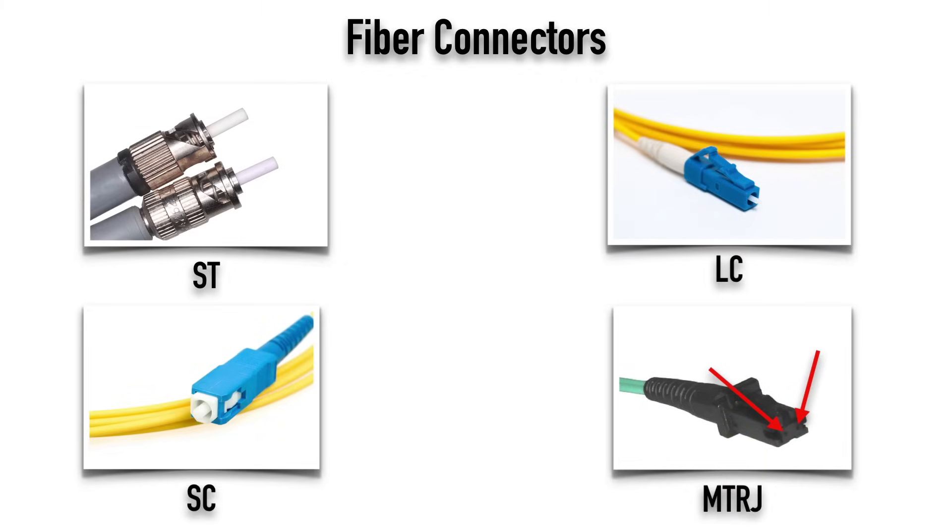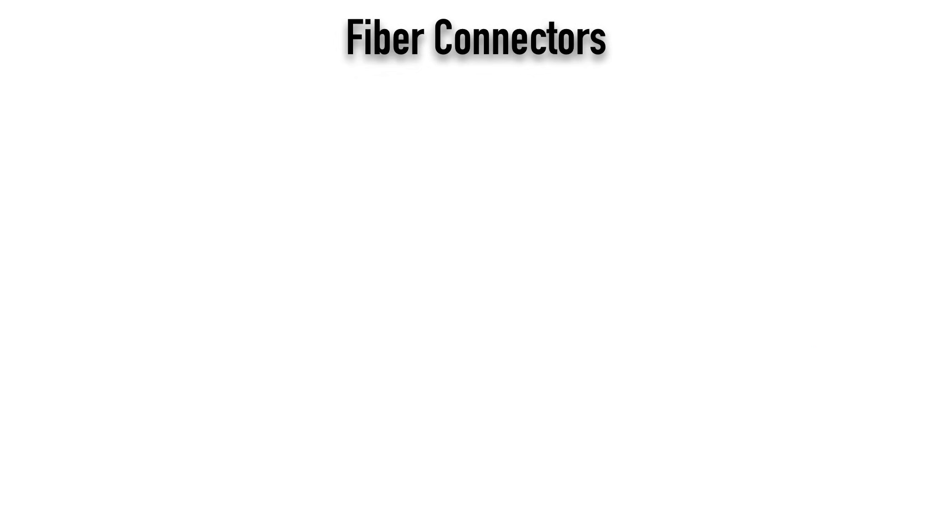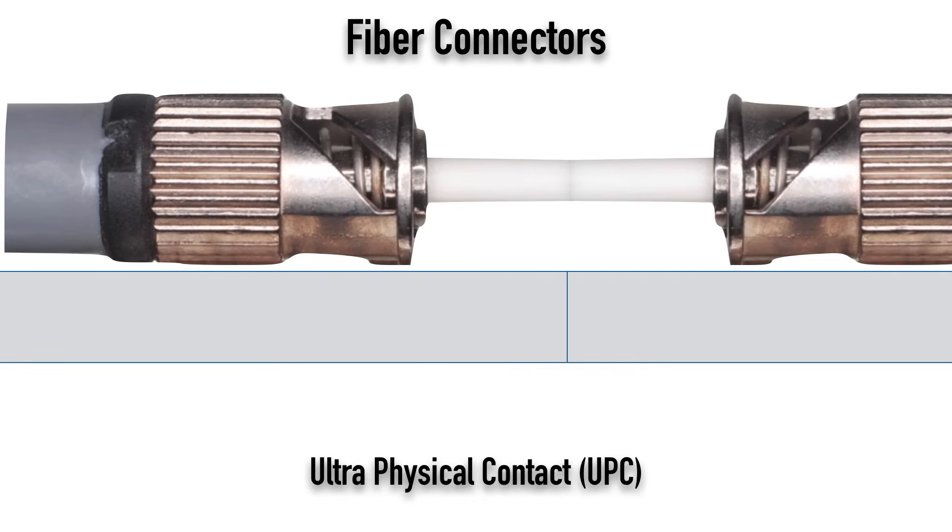Now, let's imagine, and we'll just use an ST connector for this example, but let's imagine that we have a couple of ST connectors in a fiber distribution panel where we have the ends of these ST connectors bumping up against one another. And we're trying to send a light source through one connector into the other connector. If they meet with very flat surface, hopefully we're going to have very little loss. There are fiber optic polishing kits to try to minimize this loss, but there's going to be some reflection.